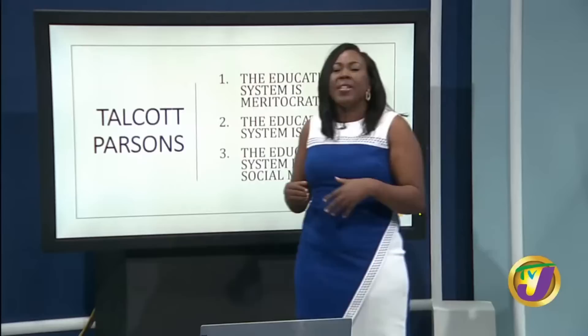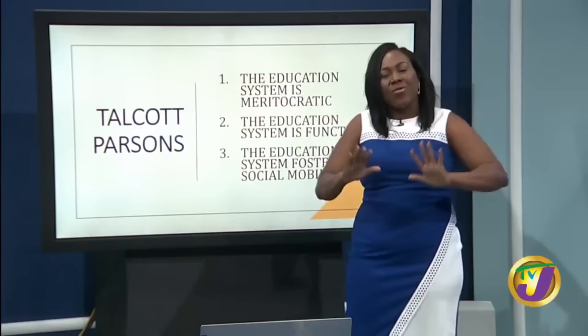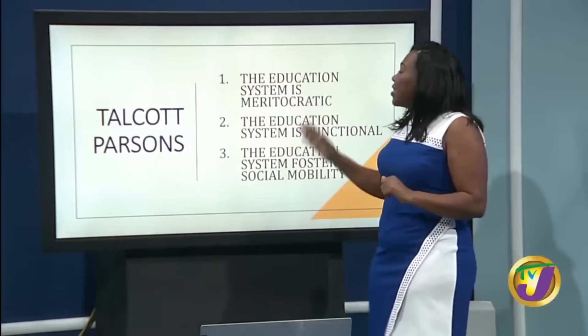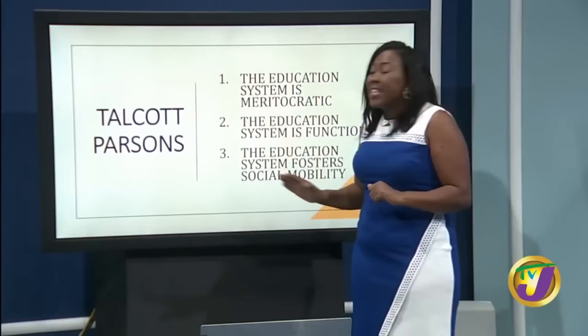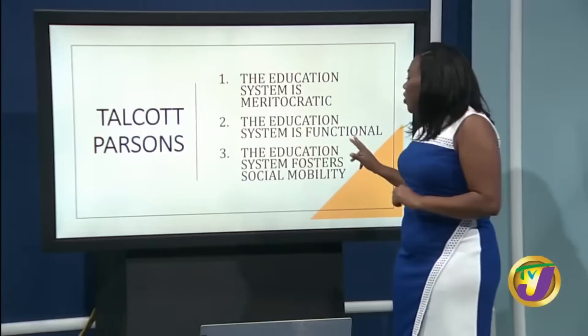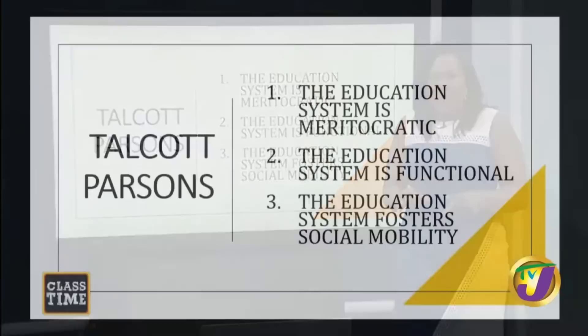We move on to Durkheim's protégé, Talcott Parsons. Parsons is a fan of Durkheim — he followed his work and many of his writings are based on Durkheim. Talcott Parsons agrees that the education system is functional, but he makes his own points. He says: one, the education system is meritocratic; two, the education system is functional; and three, the education system fosters social mobility.